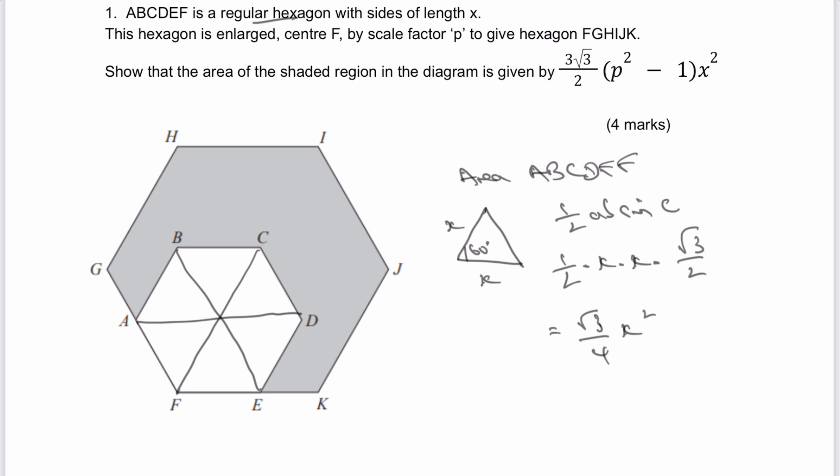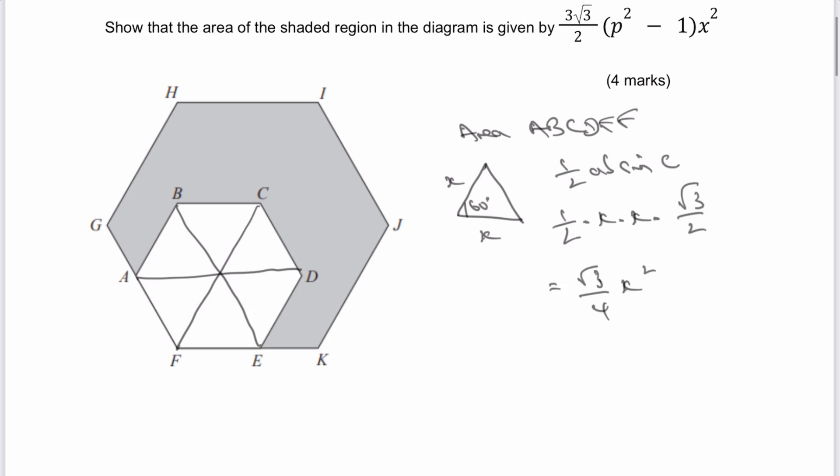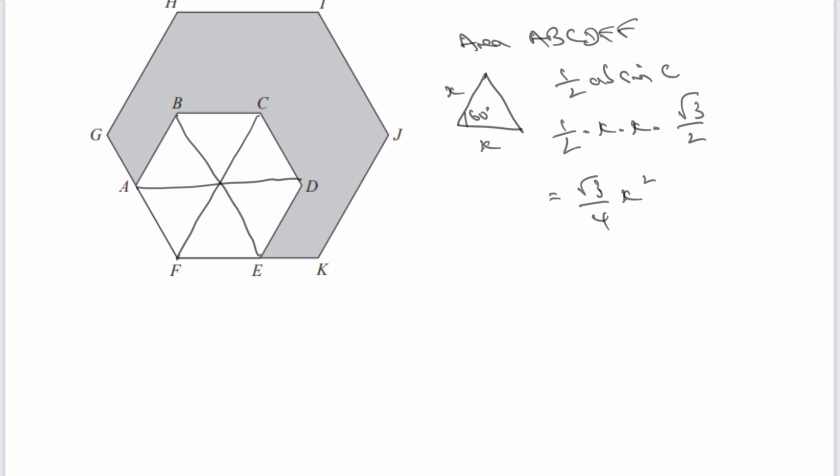Therefore, if we've got six of these, if I can multiply that number by 6, I'm going to get a total area for the small hexagon as being equal to 6 root 3 over 4 multiplied by X squared. And that can then simplify to 3 root 3 over 2 X squared.